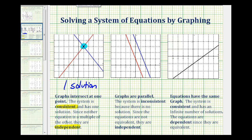We could also graph two lines that never intersect, or they're parallel. In this case, there's no solution to the system, and the solution is called inconsistent, and the equations are independent.